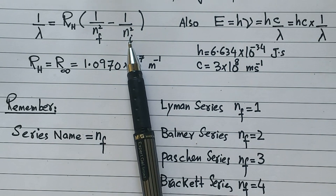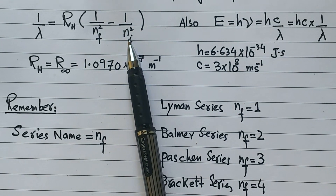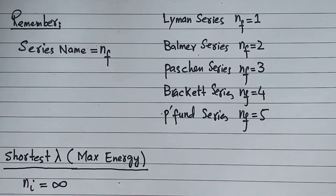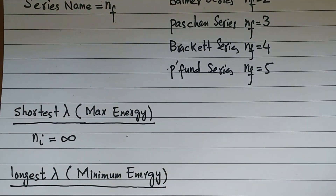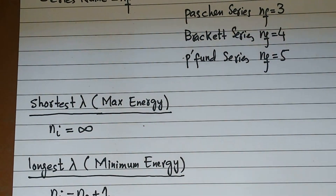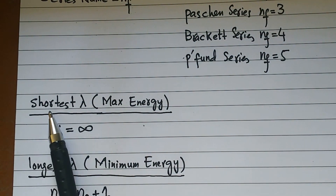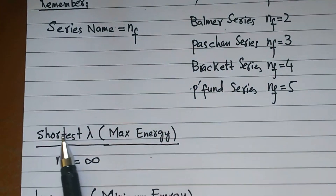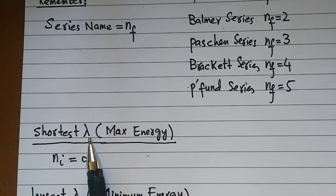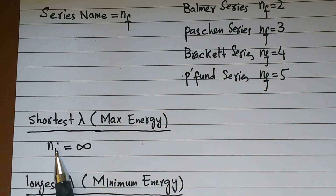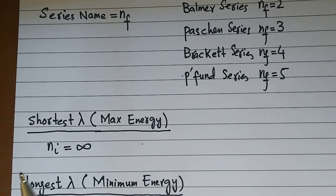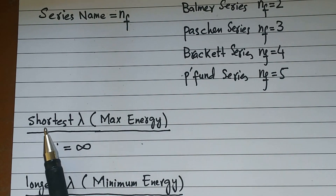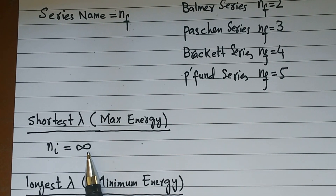Now the issue is the initial state NI. For the next part, we have to find the shortest wavelength. When the question asks for the shortest wavelength, you always keep NI equal to infinity. This is something you must remember — the shortest wavelength always happens when NI equals infinity.